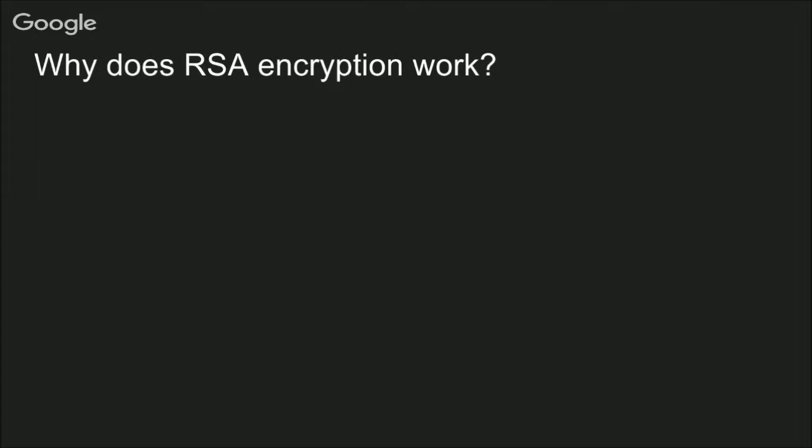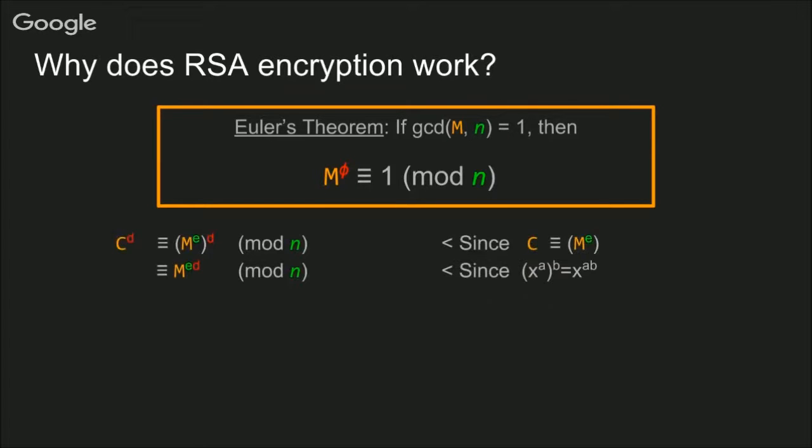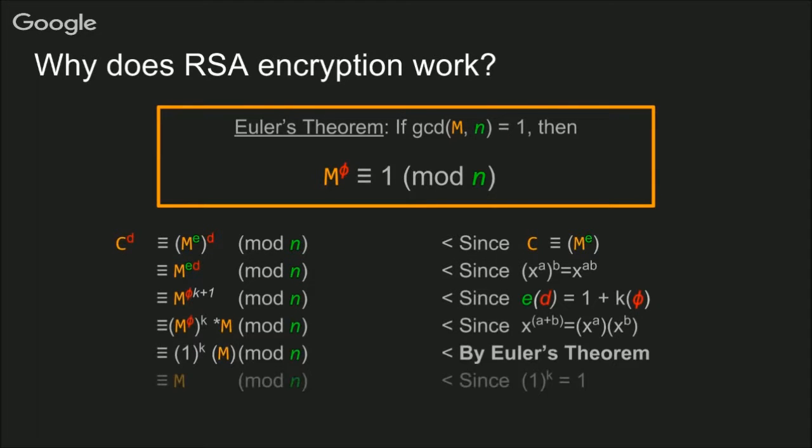You also may be wondering, why does RSA encryption work? What's the math behind it? The key is something called Euler's theorem, which lets us prove that C to the Dth power reduces back to M mod N. And you can pause here if you want to understand the algebra.